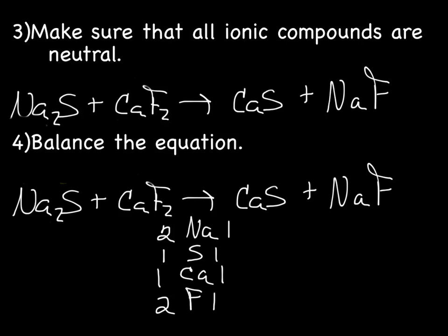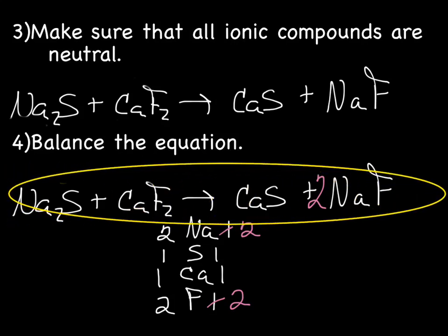So, starting from the top to fix the Na's, we have 2 on the reactant side. So, let's put a 2 in front of NaF on the product side. That gives us 2 sodiums and 2 fluorines. And, I believe that answers our question. So, our final answer is right there. That is how you complete double displacement reactions.